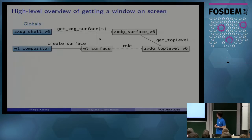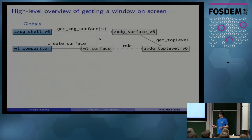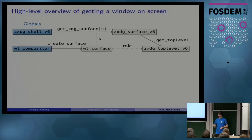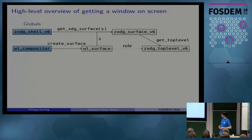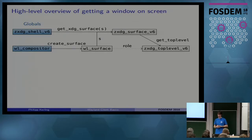XDG shell is still unstable at the moment and is part of the wayland-protocols repository. But it's the de facto standard you should be using. The wl_shell in core Wayland is effectively deprecated and you shouldn't be using it anymore. There's a stable version of xdg_shell that already exists, but not many servers support it yet. For now, use xdg_shell version 6. When it's eventually replaced by the stable version, it's just a copy-and-paste job — remove the 'unstable' prefix and the version number at the end.